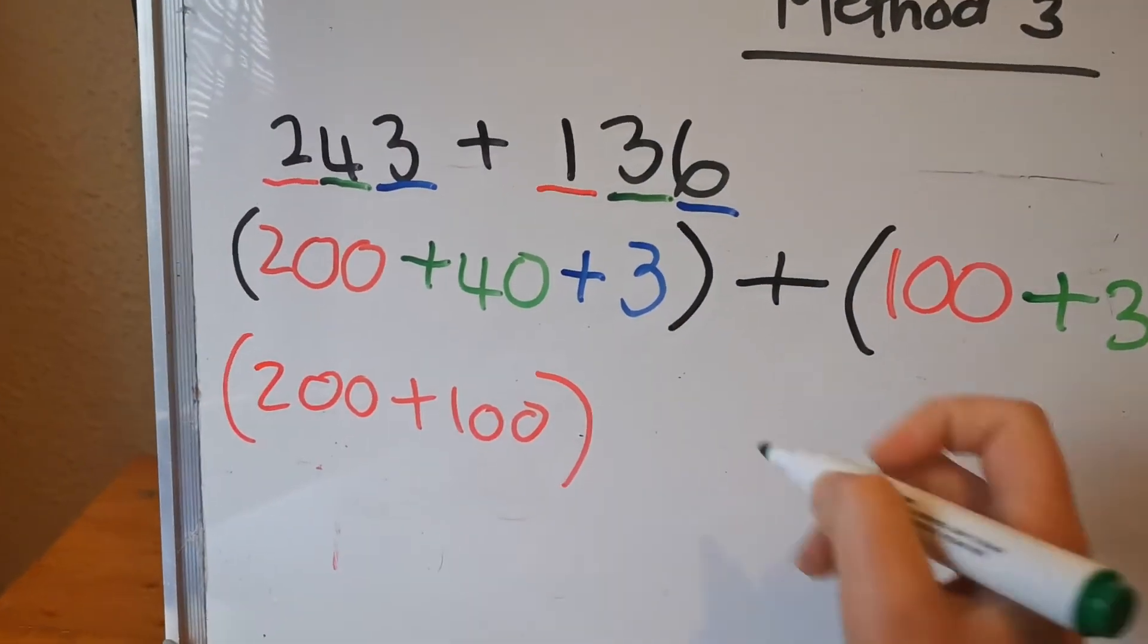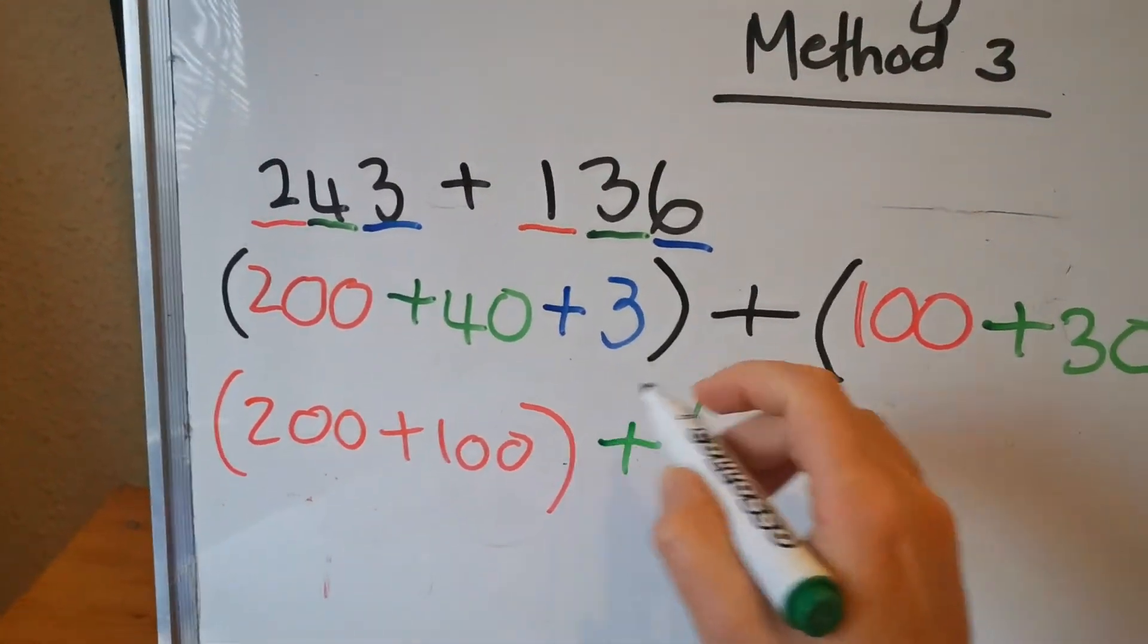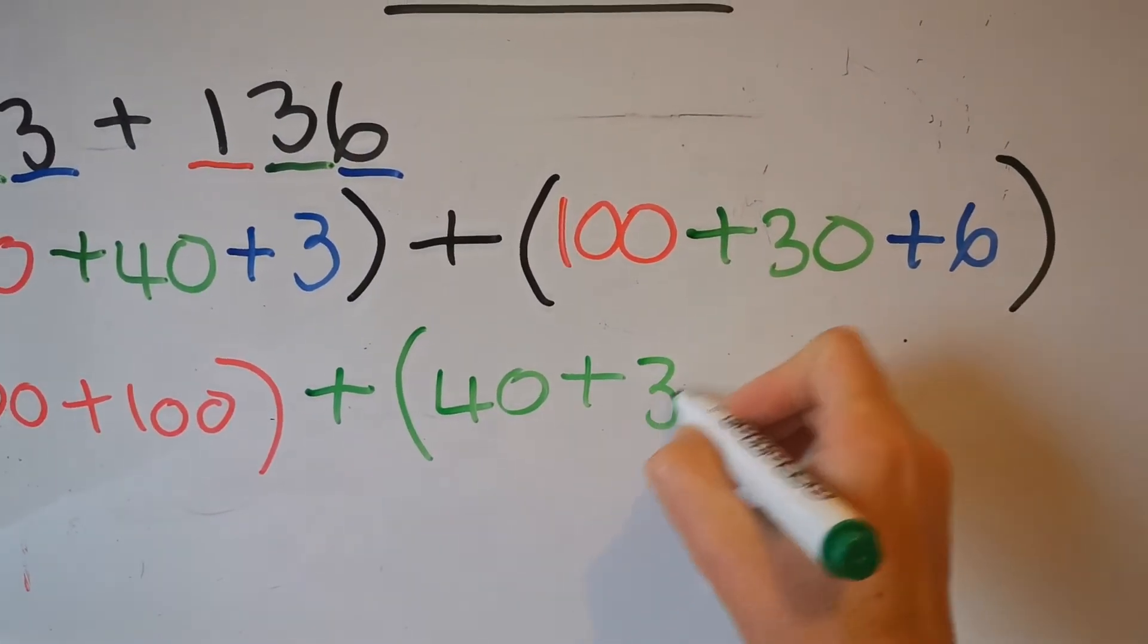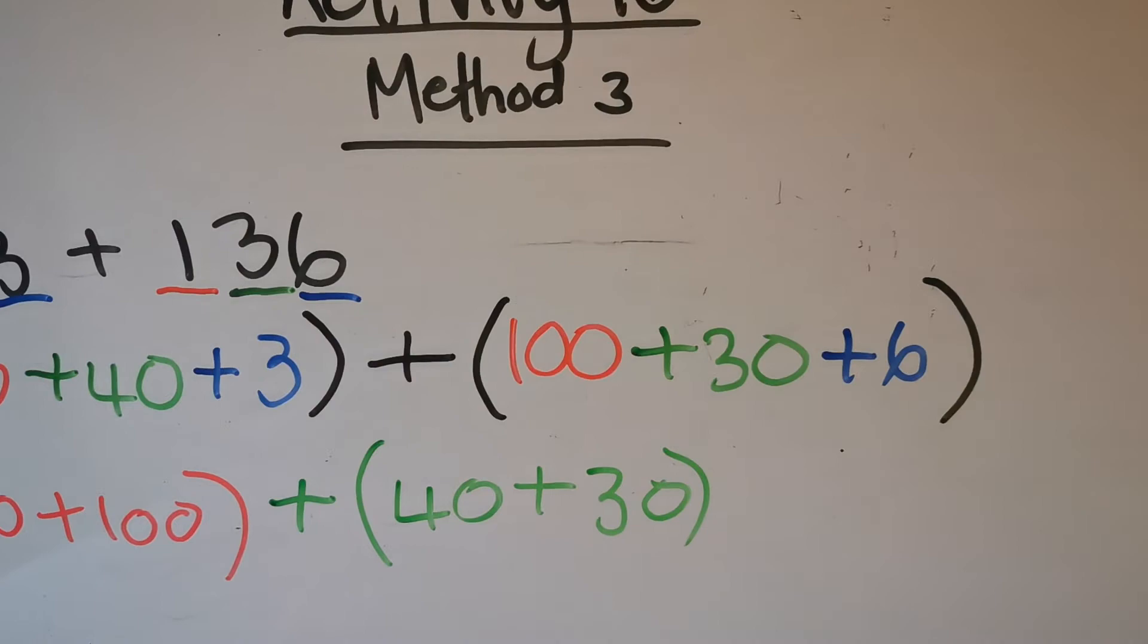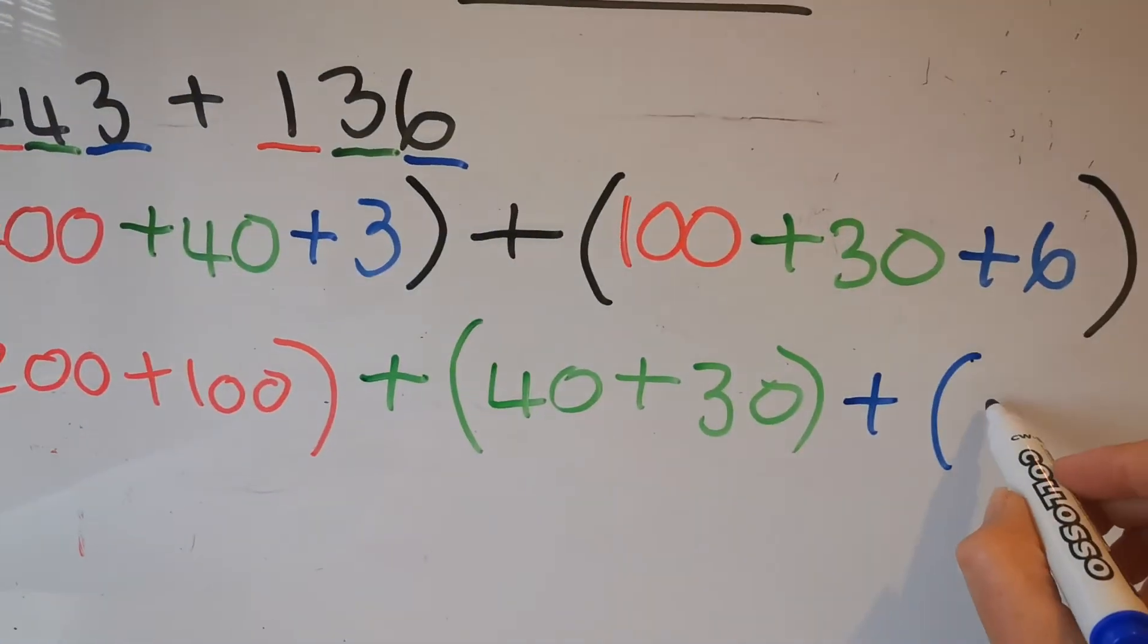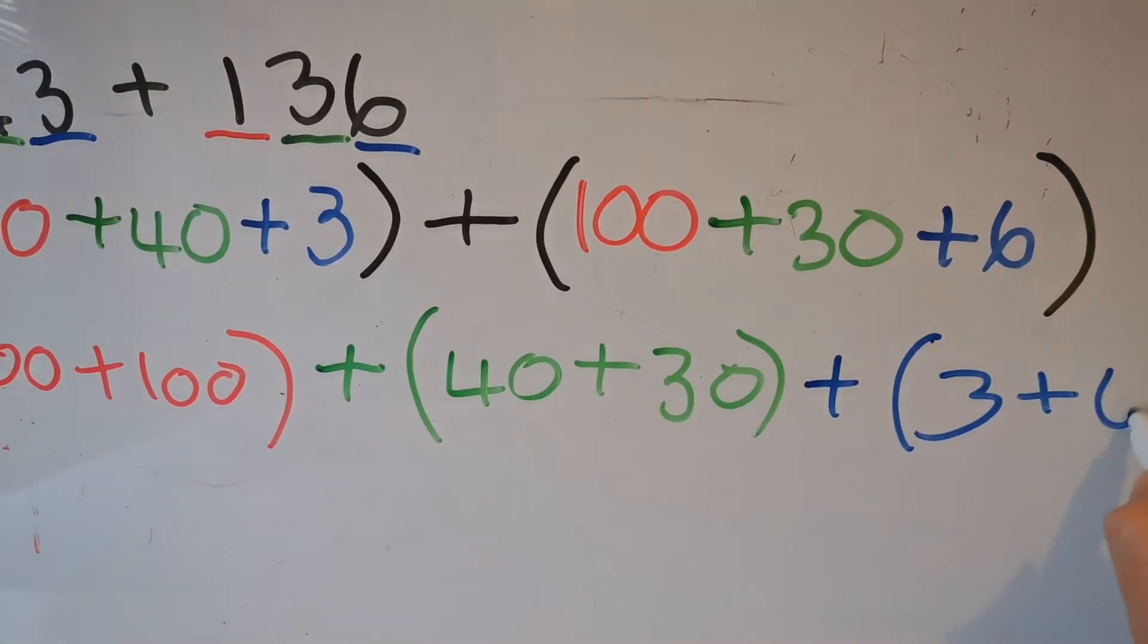Then you're going to make a bracket for the tens and you're going to write the two tens, 40 and 30. So it's 40 plus 30. And then you're going to make the last bracket for the units. And the two units were 3 and 6, so it's 3 plus 6.